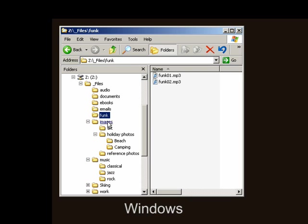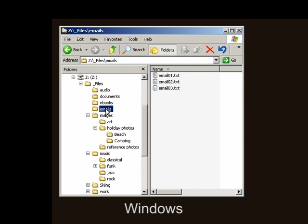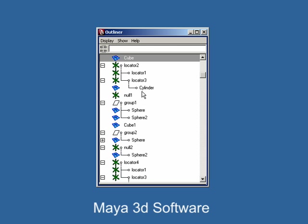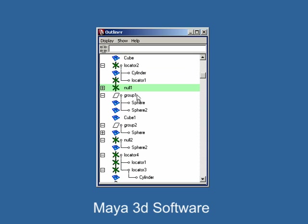Hierarchies in 3D software are much like the folders in Windows that organize our computer files. In 3D, they're almost the same, but rather than organizing files, they categorize three-dimensional objects.